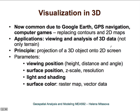We need to define certain parameters for this projection. First of all, we need to define the viewing position, which is usually defined by height, distance, and angle from which the viewer is looking at the three-dimensional object or surface. We can also manipulate the surface position, the exaggeration, and resolution.